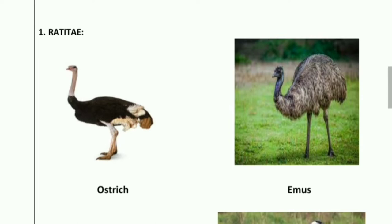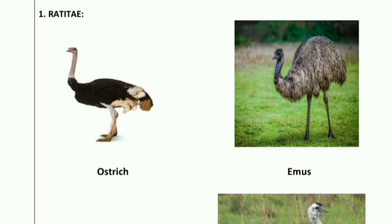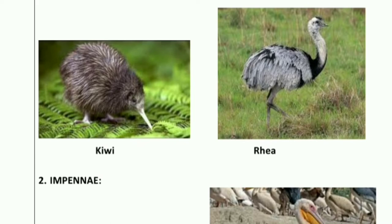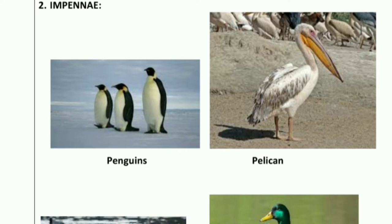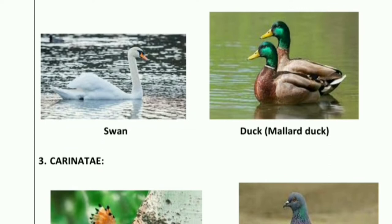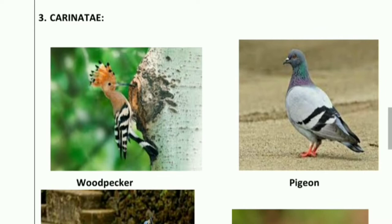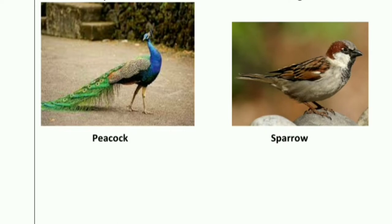I have displayed pictures here. For Ratitae: this is the ostrich, then the emu, then the kiwi bird — not the kiwi fruit — and then the rhea. For Impennae: examples are penguins, the American white pelican, swan, and mallard duck. For Carinate: examples shown include woodpecker, pigeon, peacock, and sparrow.